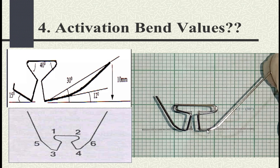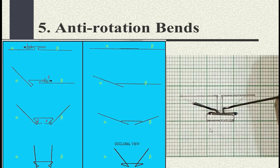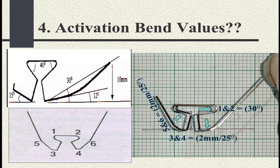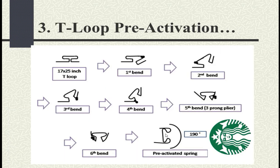The answer regarding activation bend values is: bends one and two are 30° only, given in the loop bilaterally. Bends three and four are 2 mm away from the leg of the T-loop and are 25°. Bends five and six are a further 2 mm away and are also 25° bilaterally. If you follow the correct bends, your final T-loop should match this shape — it will not appear as the excessive bend seen in previous photographs.